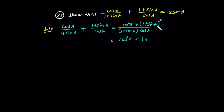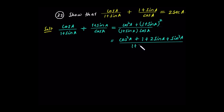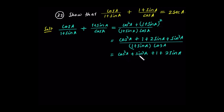2 times 1 times sin(a) is 2 sin(a), plus sin squared(a). All over (1 + sin(a)) times cos(a). The numerator is cos squared(a) plus sin squared(a) plus 1 plus 2 sin(a), all over (1 + sin(a)) times cos(a).